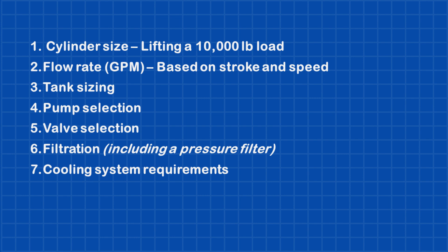First, we'll figure out the right cylinder size to lift a 10,000-pound load. After that, we'll calculate the flow rate in gallons per minute based on the stroke length and speed. Next, we'll go over tank sizing, selecting the right pump, and determining the motor horsepower needed.